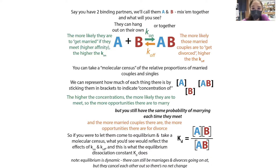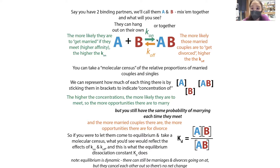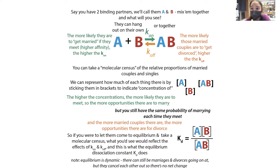So we have two binding partners — we'll call them A and B. They can bind and they can unbind. This is a reversible reaction, and if you let it go long enough, it's going to come to equilibrium. What happens at equilibrium is that the amount binding equals the amount unbinding, so there's no net change in the proportion of bound to unbound.